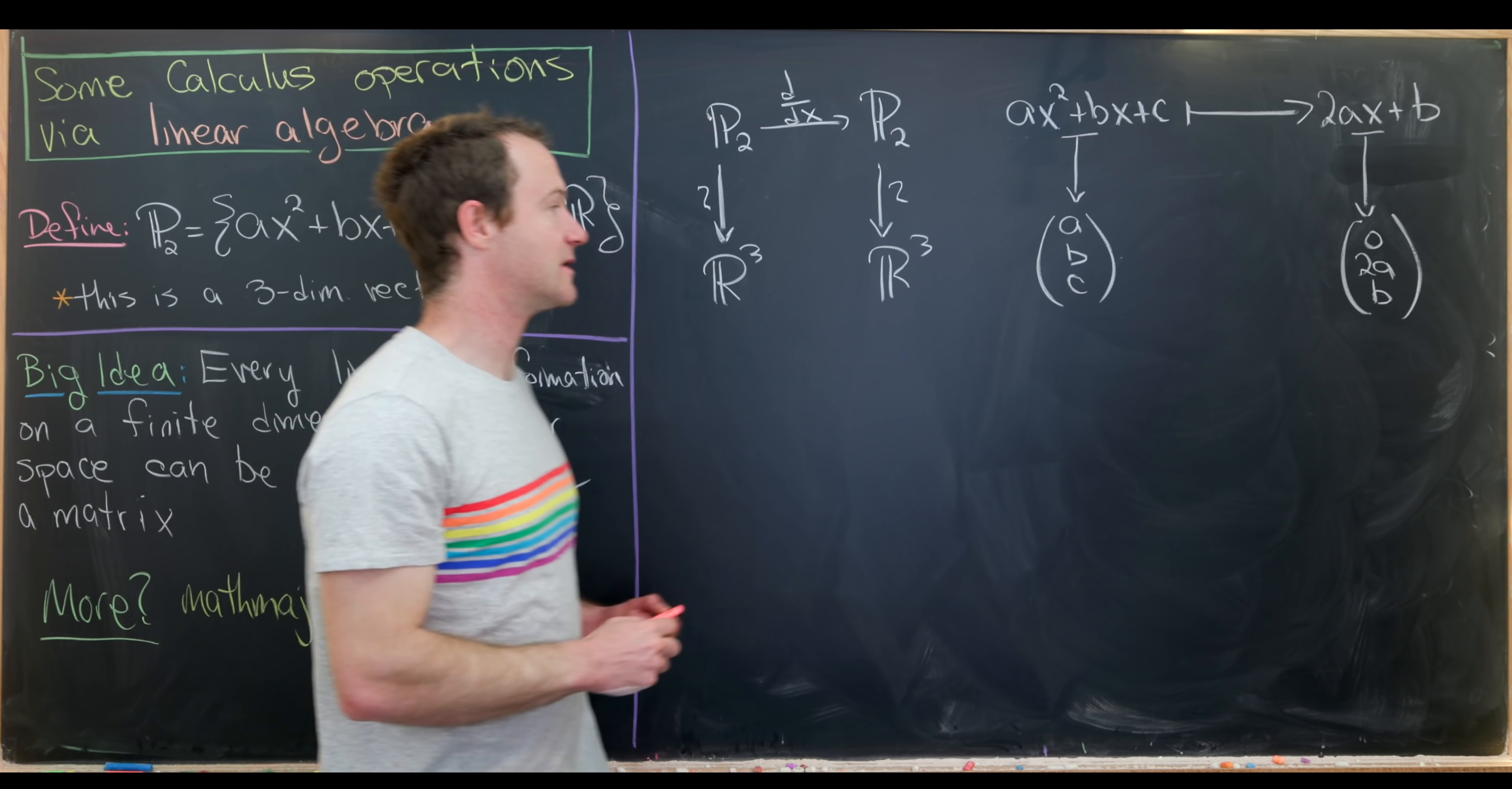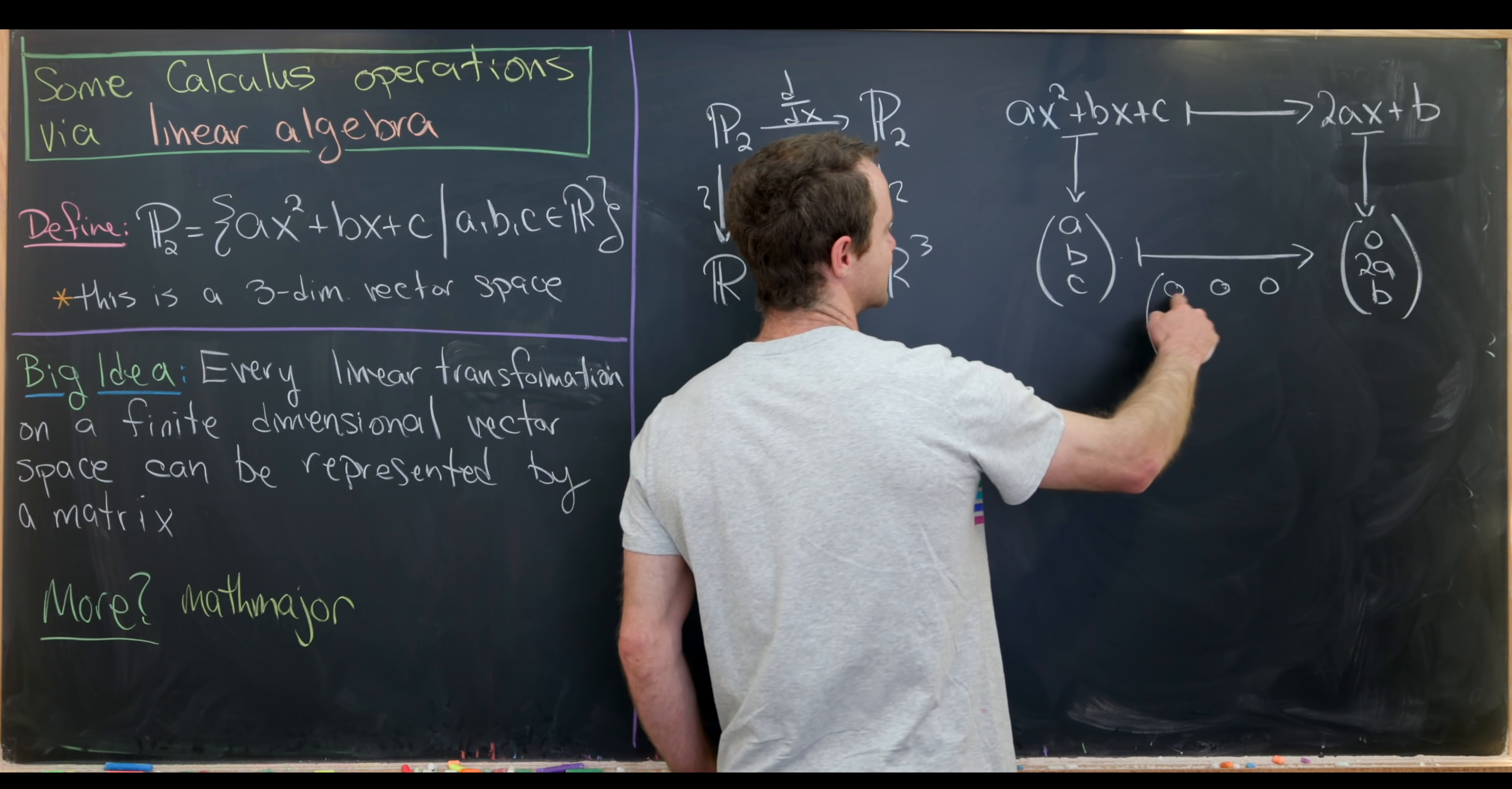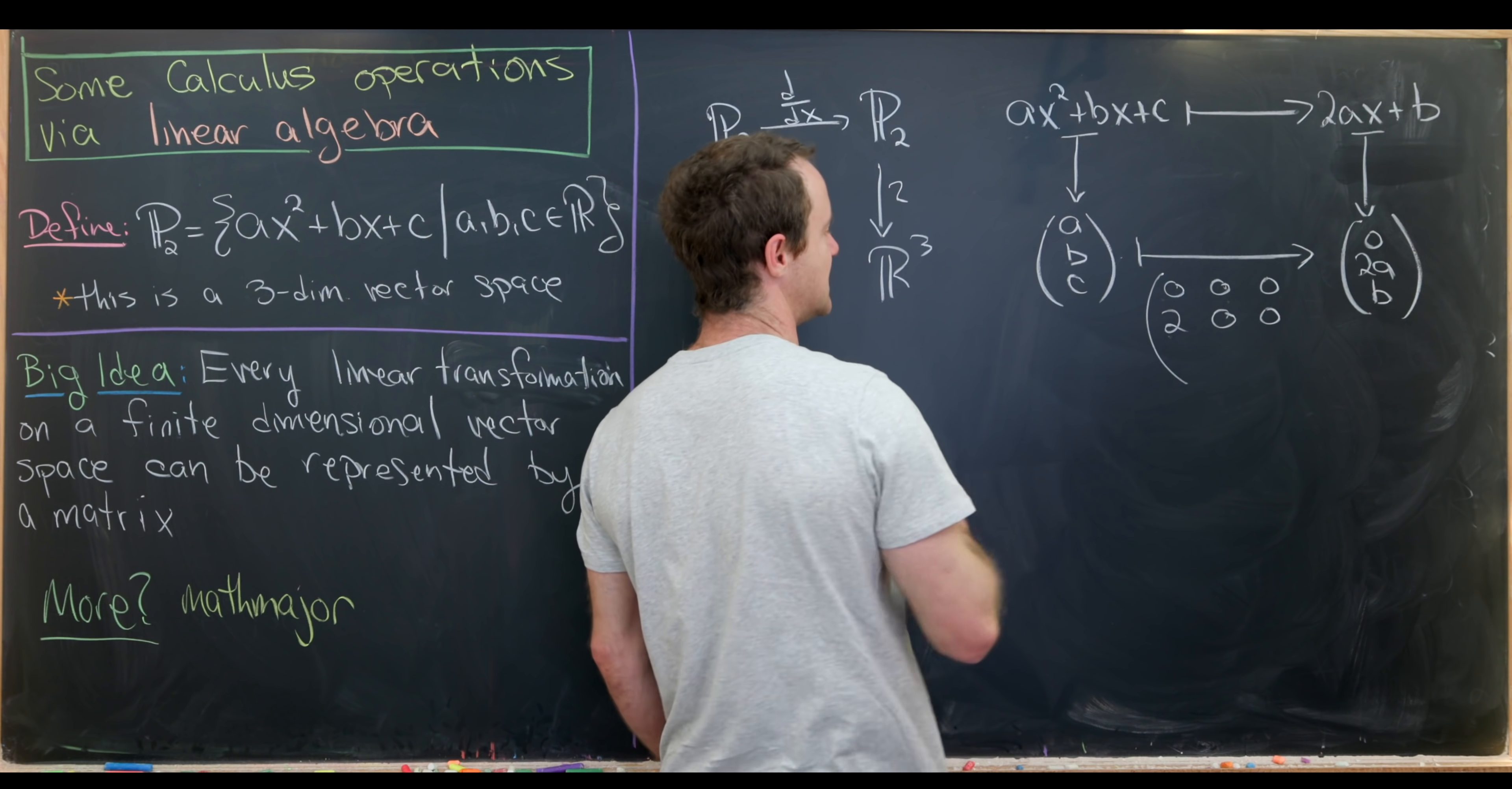The real question is, can we complete this arrow on the bottom so that we can map from that 3 vector to that 3 vector? And we can. It's pretty easy to check that it's the following matrix. The first row is all 0s. So that's pretty obvious because this first row, when it flips and multiplies into this column, we need all of those to give us 0. Then what about this second row? We'll have a 2 here, a 0 here, and a 0 here. That's because we need 2 times a, and then we don't need any contribution from b or c.